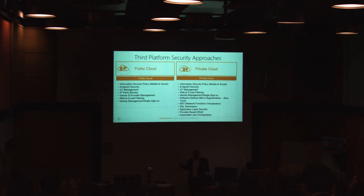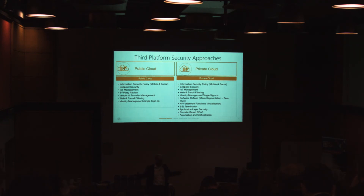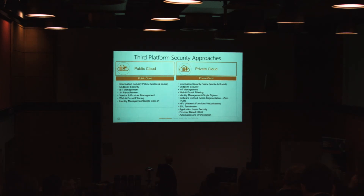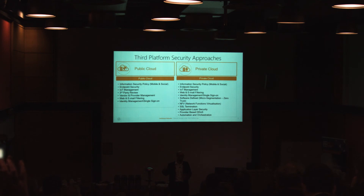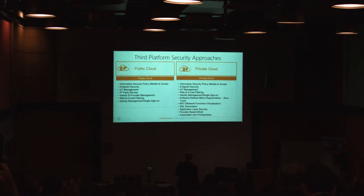A few messages to leave you with — I've taken either end of the scale, public and private cloud. These lists aren't exhaustive, but in both cases you firstly need to look at your security policy and ensure it includes new considerations: mobile, social, BYOD, et cetera. For public cloud in particular, you need to look at third-party and vendor management — how you deal with the people who have your data and applications. Third-party reviews, SOC 2 reports, and similar assessments become important. And then the basics: endpoint security, outbound email filtering, et cetera.